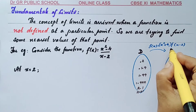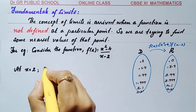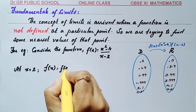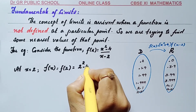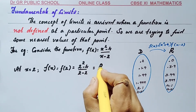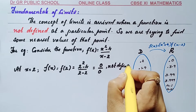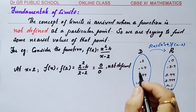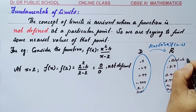This is the domain and this will be the range of the function. Consider a value from the domain as x equal to 2. When x equal to 2, what happens to f(x) or f(2)? f(2) equals: substituting the value x as 2, you get 2 squared minus 4 divided by 2 minus 2, which gives 0/0, which is not defined.